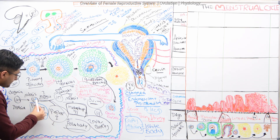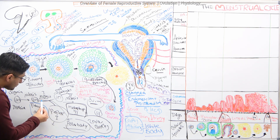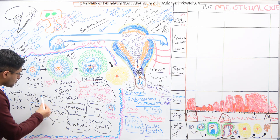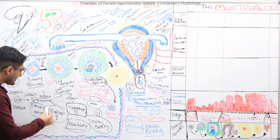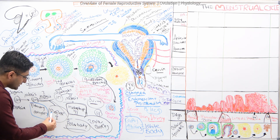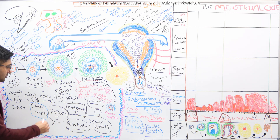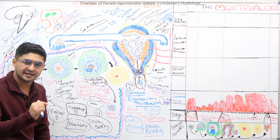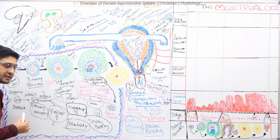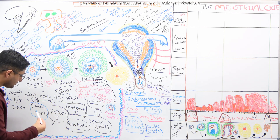These primary oocytes start meiosis, but they do not complete the cycle. They get arrested in prophase I — specifically at the diplotene stage of prophase I — and they remain arrested there until the female hits puberty.